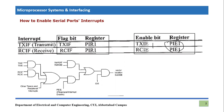These bits are present in register PIE1. If we go through this specific chart, you can easily understand it, because we have already seen two types of interrupts before this — external interrupt and timer zero interrupt. In the chart, TXIF and TXIE are both present here, and RCIF and RCIE are present here as well.